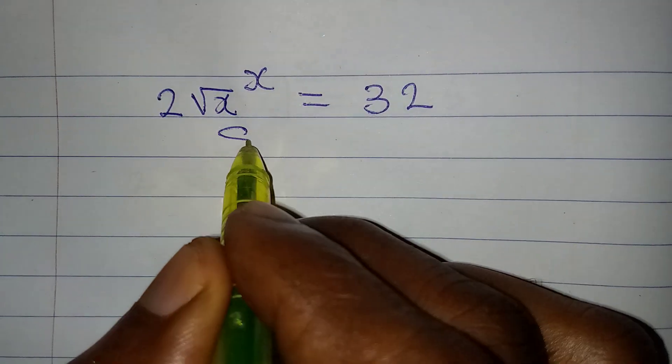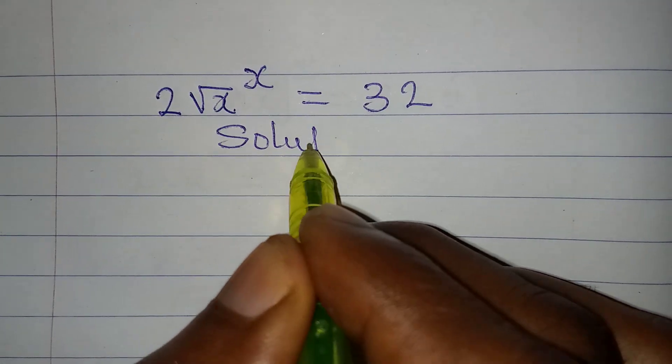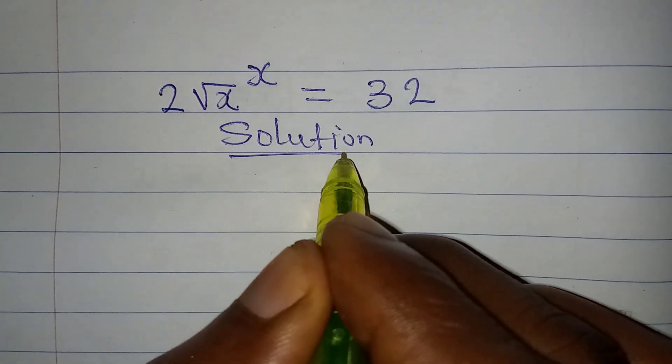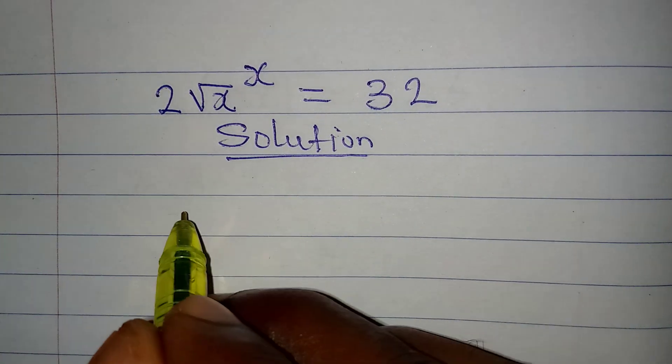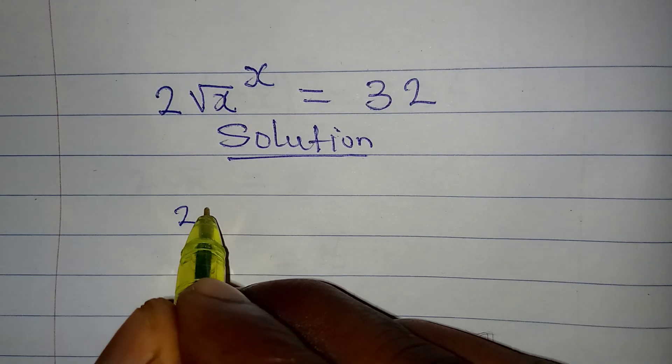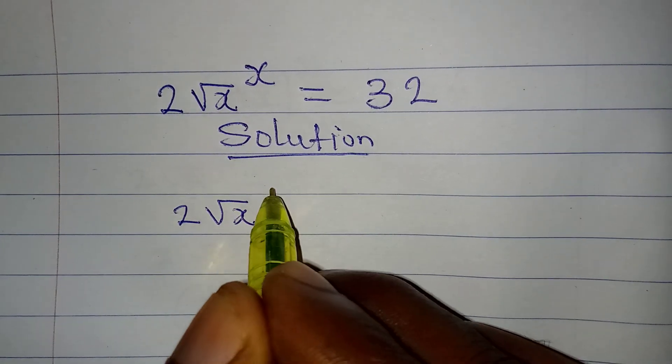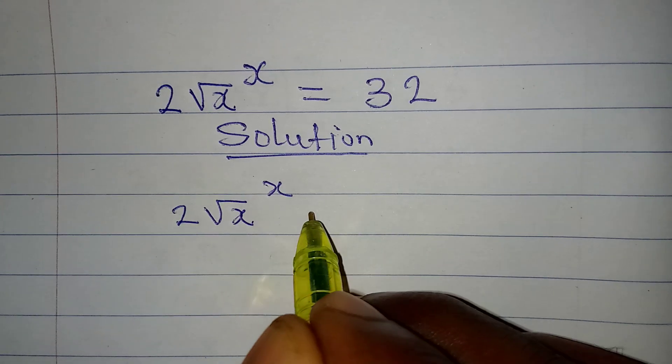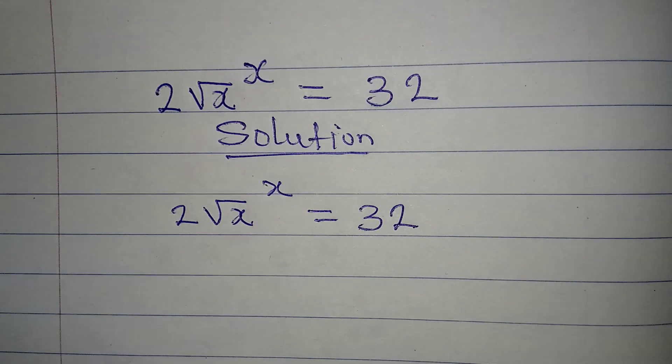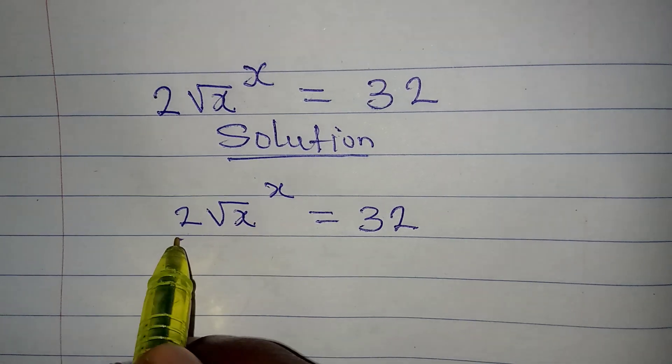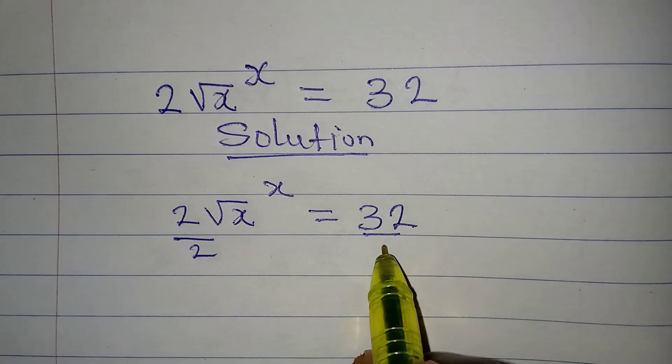Hello everyone, you're welcome to Few Cool Mathematics. Let's provide the solution to this problem right away. We have 2√x^x = 32. The first step is to divide everything by 2.